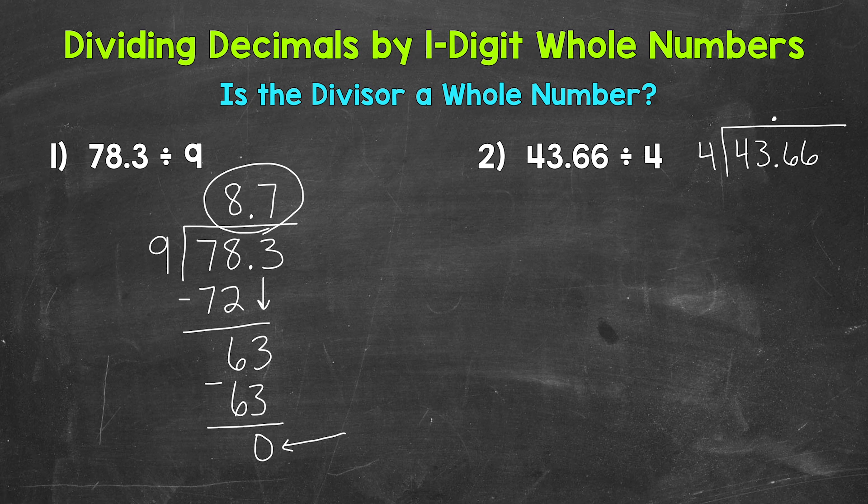Now we go through our division process. Start with divide. So we have 4 divided by 4. How many whole groups of 4 in 4? 1. Now we multiply. 1 times 4? 4.